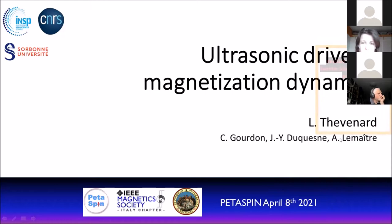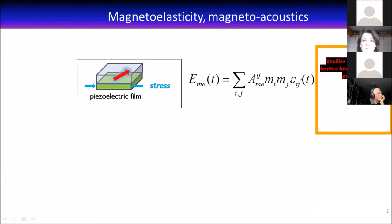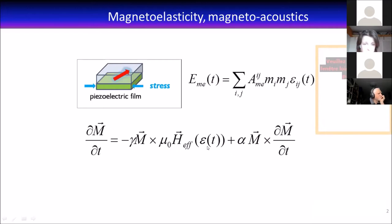The basics of this work is magnetoelasticity and its time-dependent variant, magneto-acoustics. That's essentially the fact that in most magnetic materials, the strain state of the sample is related to its magnetic state by this magnetoelastic constant, giving a magnetoelastic energy. If you have a time-dependent strain, you have a time-dependent magnetoelastic energy, and when you plug that into the LLG equation, you can derive an effective field, a magnetoelastic field that is capable of driving the magnetization dynamics.